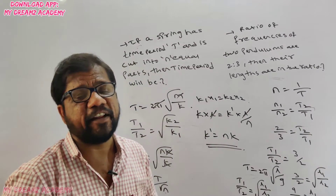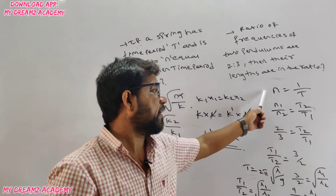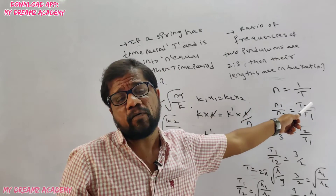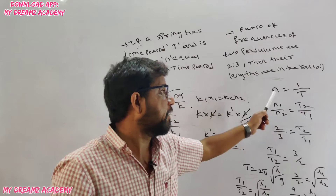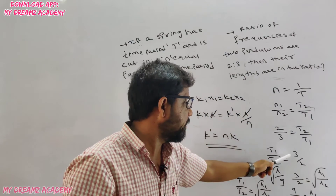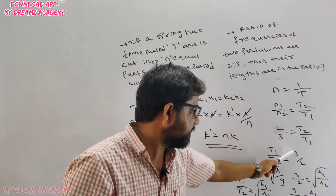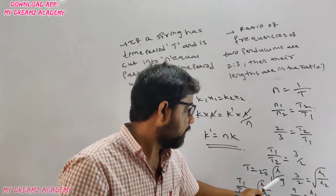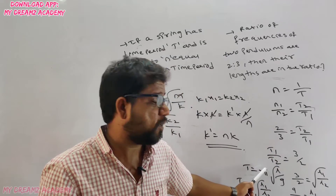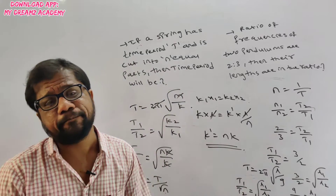To recap: first convert frequency into time period using n = 1/T. So n₁/n₂ = T₂/T₁. Given n₁/n₂ = 2:3, we get T₂/T₁ = 2:3, which implies T₁/T₂ = 3/2. Then apply the basic relation T = 2π√(l/g) to find the length ratio.